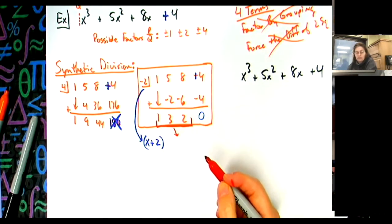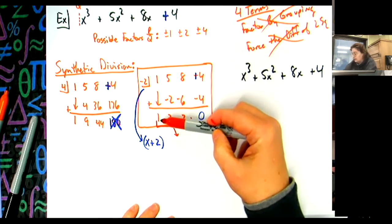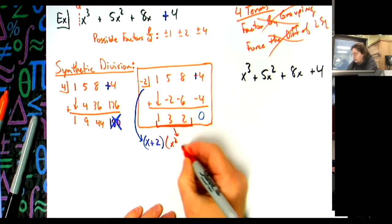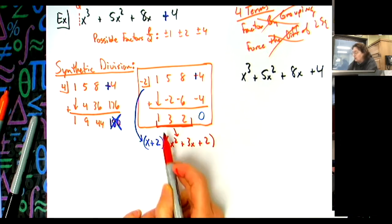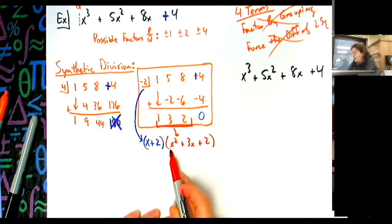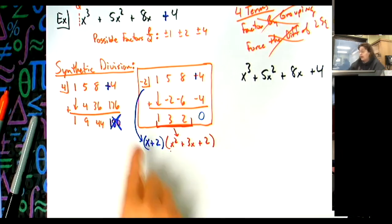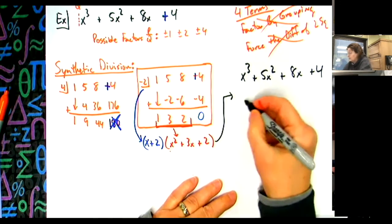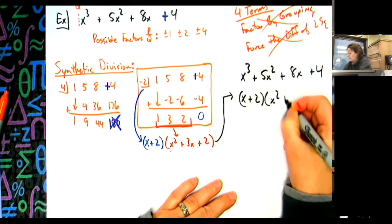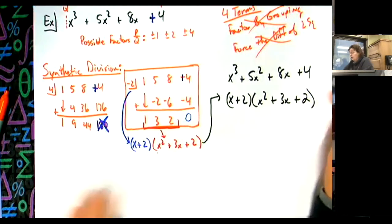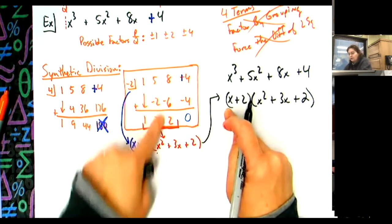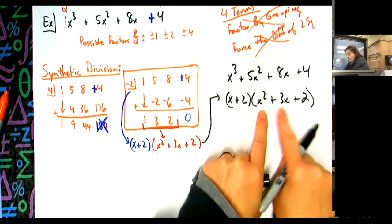Starting over with the corrected polynomial: x cubed plus five x squared plus eight x plus four. From my synthetic division with negative two giving a remainder of zero, x plus two is a factor. Reading the synthetic division result right to left — the numbers one, three, two give me one x squared plus three x plus two. So the polynomial factors to x plus two times x squared plus three x plus two.